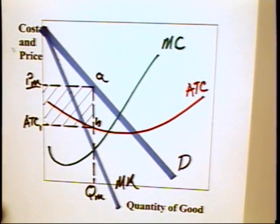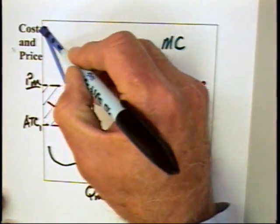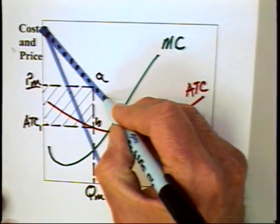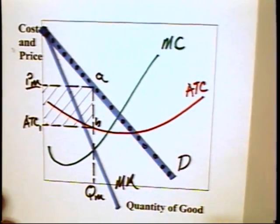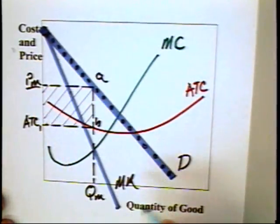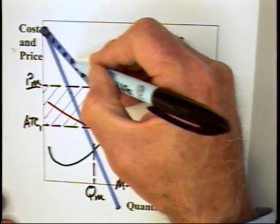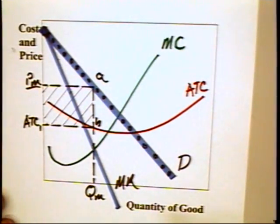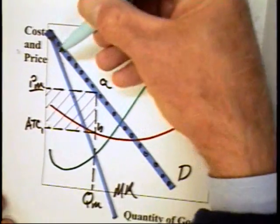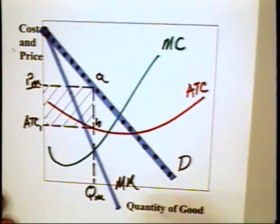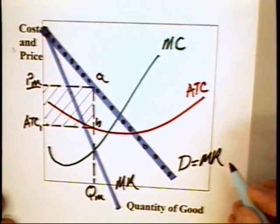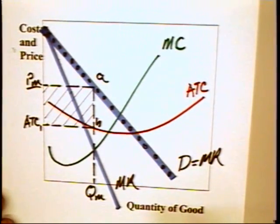But let's suppose that the firm engages in perfect price discrimination. That is, it is able to charge a different price for every unit that it sells. In other words, it can walk people down their demand curve. It charges a price way up here for the first unit sold to some buyer, then this price, then this price, and this price, and so on down the line. If it is charging a different price for every single unit, the price that it charges for the different units becomes the marginal revenue. And as a consequence, the demand curve becomes the marginal revenue curve.